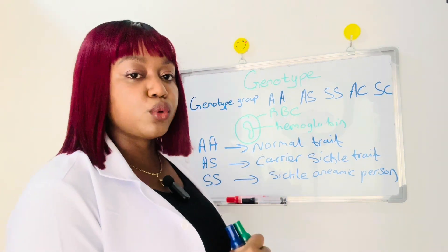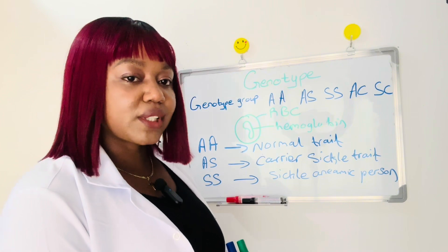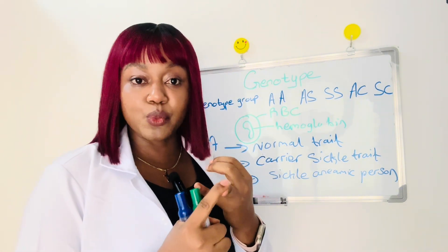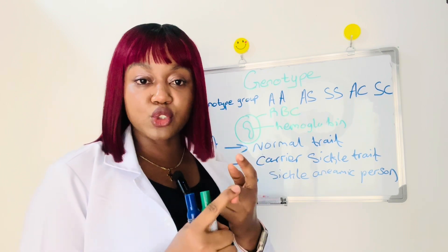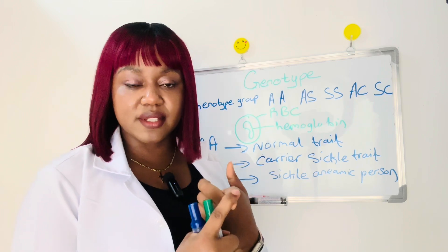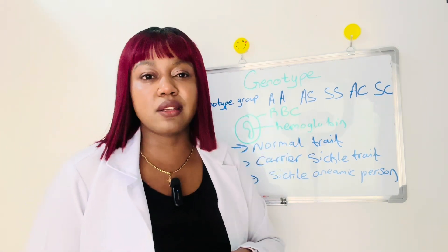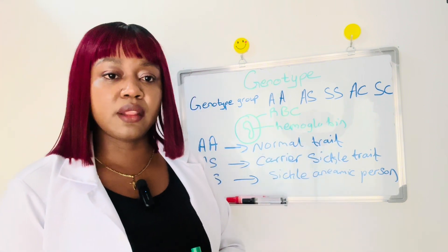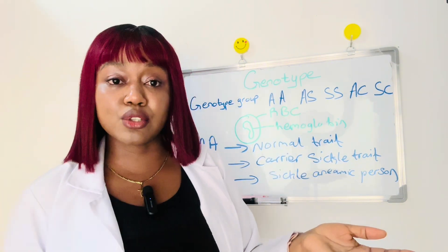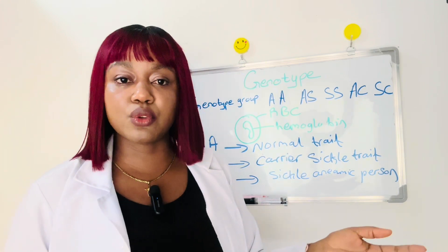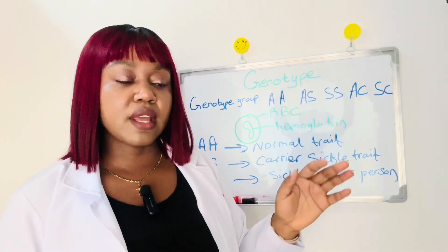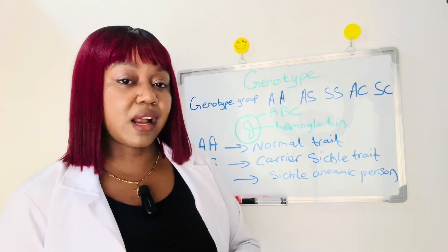That's why it's very important for you to know your genotype group — to know if you are a carrier, a normal person with no sickle cell trait, or a sickle cell anemic person. Back in those days, some women would give birth to a number of children and maybe lose some of them, with maybe 50% surviving. It could be as a result of this sickle cell trait. So it's very important to determine this.